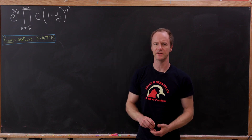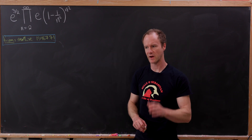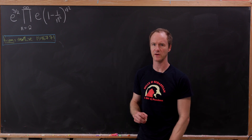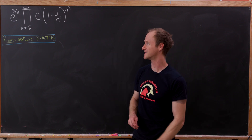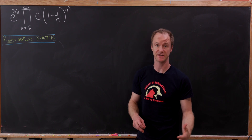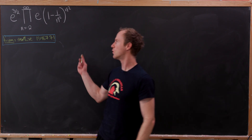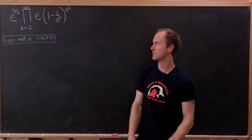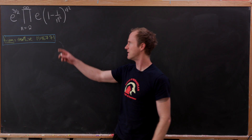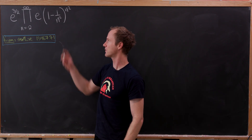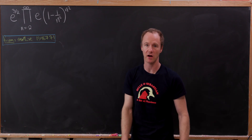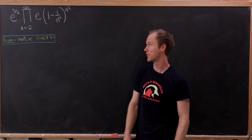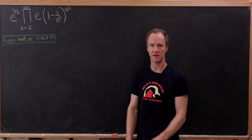Look at this infinite series and how many terms involving Euler's constant there are within it. We've got this term out front which is e to the three halves, and then every term of the infinite product also has a multiple of e.